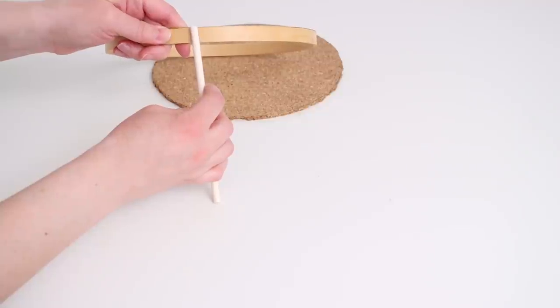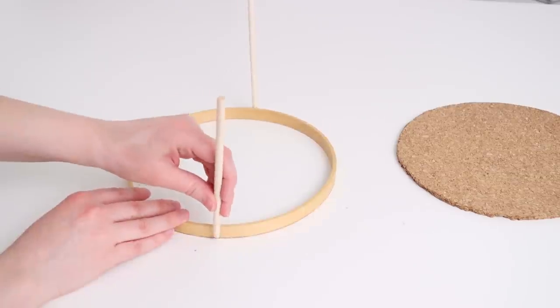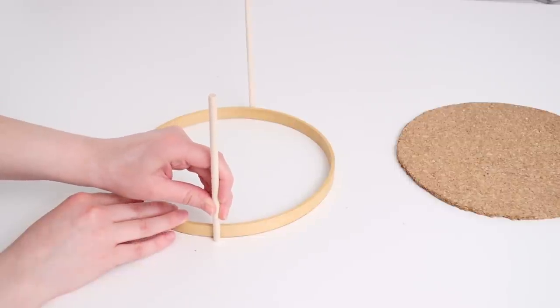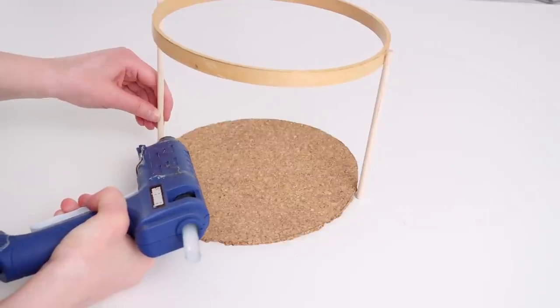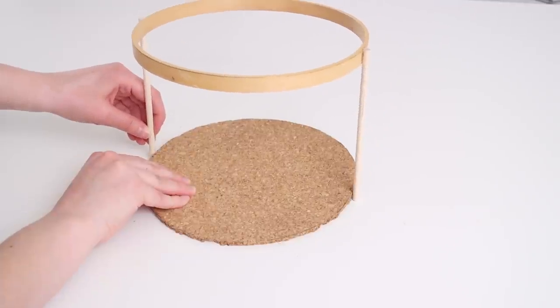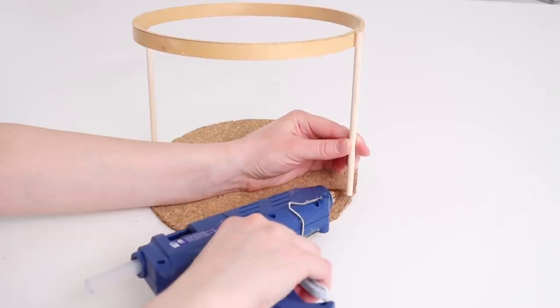I started off by gluing one of the dowels using hot glue to my embroidery hoop, and then I flipped it over and I added one more. The first thing I'm going to do is go ahead and attach this to my base by just adding a little bit of hot glue to the bottoms of the dowels and adding it to the ring. I'm doing this because it's going to keep it stable, so now I can go ahead and add in the others and not have to worry about it falling over or anything like that.